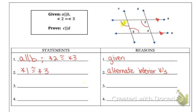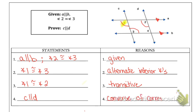Since angles one and two are both congruent to angle three, angles one and two are congruent to each other by the transitive property. Then, since angle one and angle two are congruent and they're cut by line a, that makes them corresponding angles, so the lines are parallel by the converse of the corresponding angles theorem.